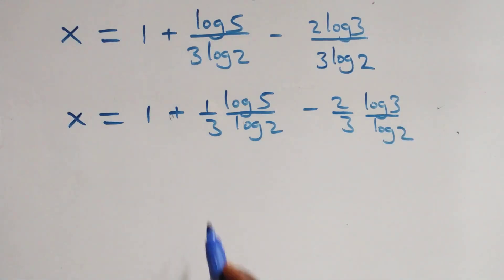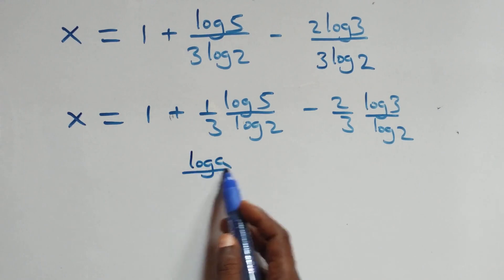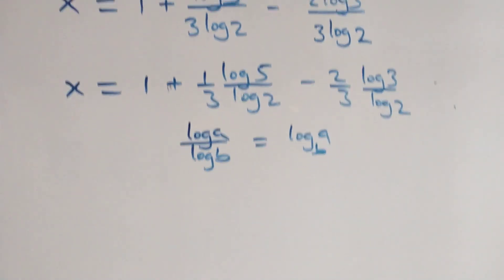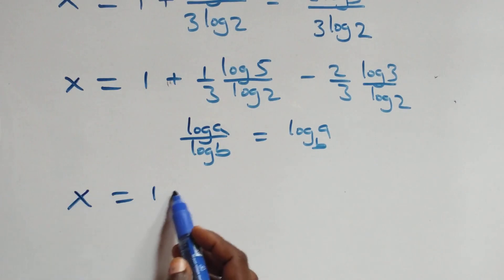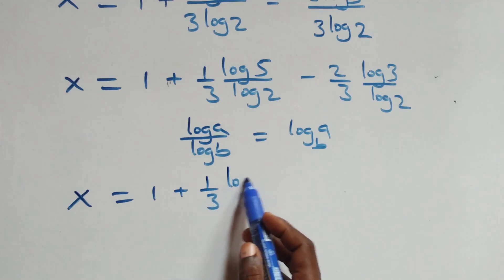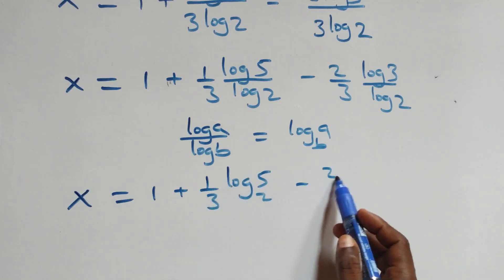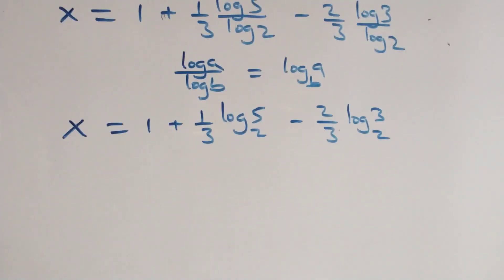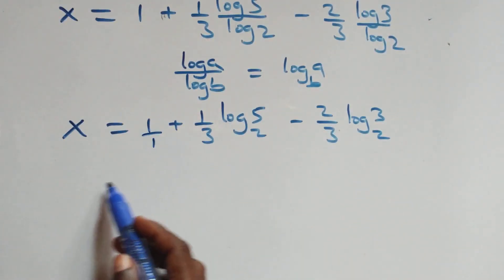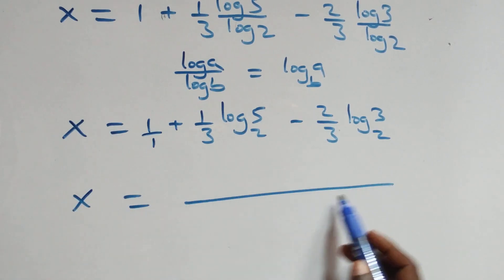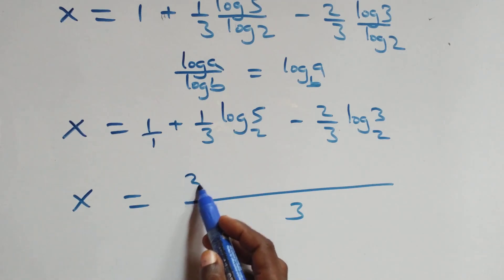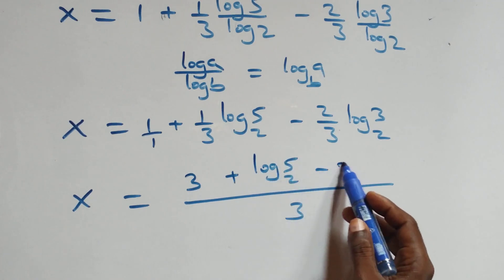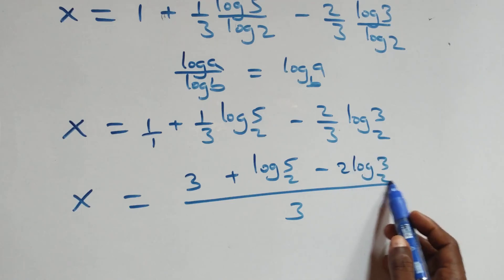Then we apply the change of base formula: log a over log b is the same thing as log a to base b. So x equals 1 plus (1/3) log₂5 minus (2/3) log₂3. Bringing together as one fraction over 3, this becomes x equals (3 plus log₂5 minus 2 log₂3) over 3.